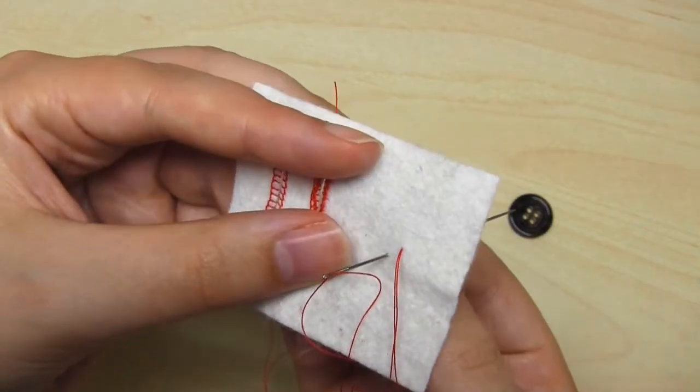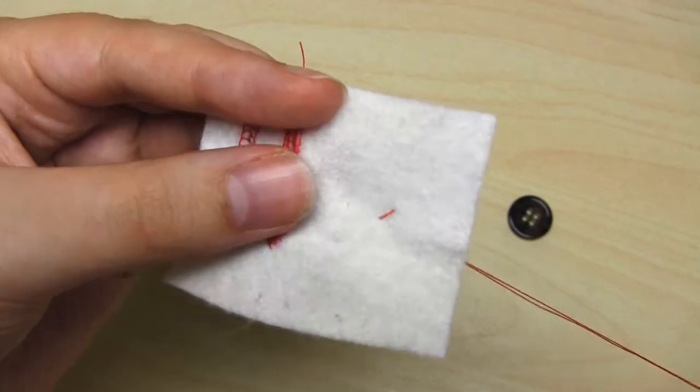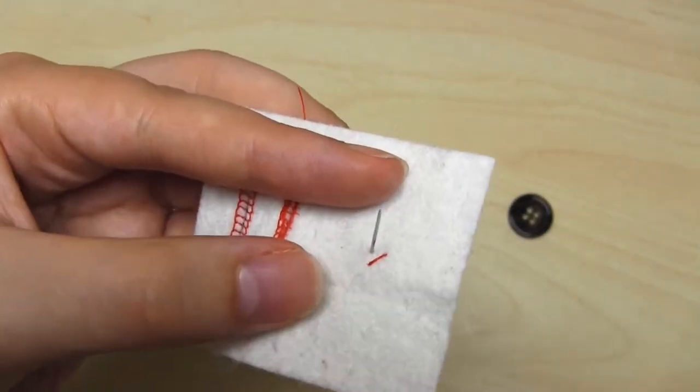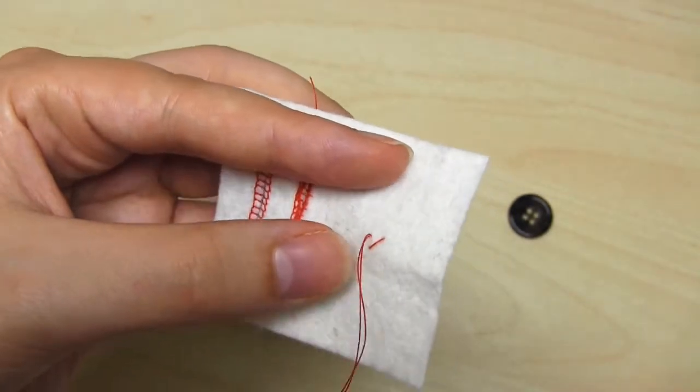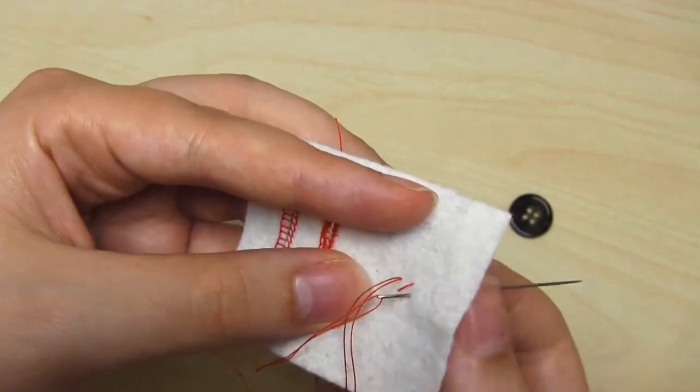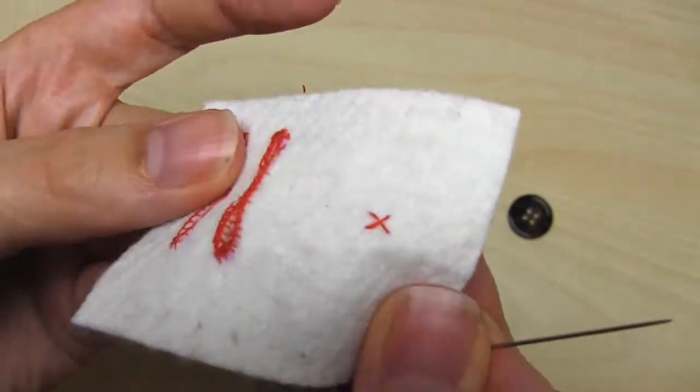So you come up through the fabric, and then go back down through the fabric to create a diagonal stitch. And then you create an identical stitch, but at 90 degrees to the one you've just made. You want this cross shape to represent the holes in the button, so you're aiming at that kind of size.